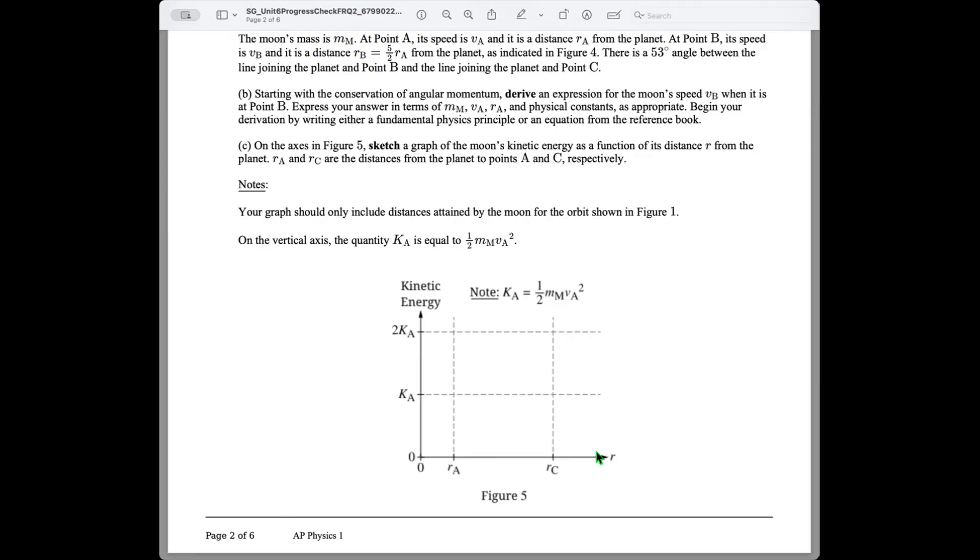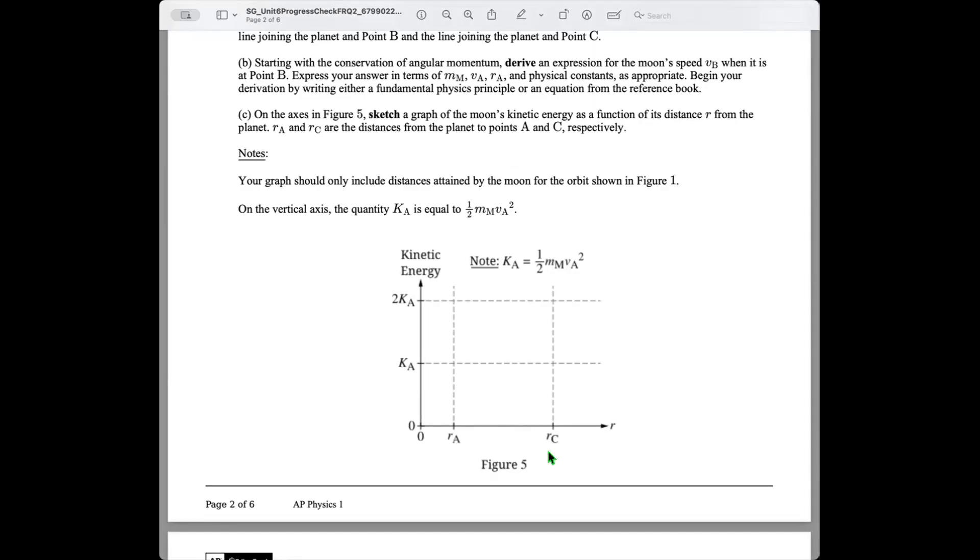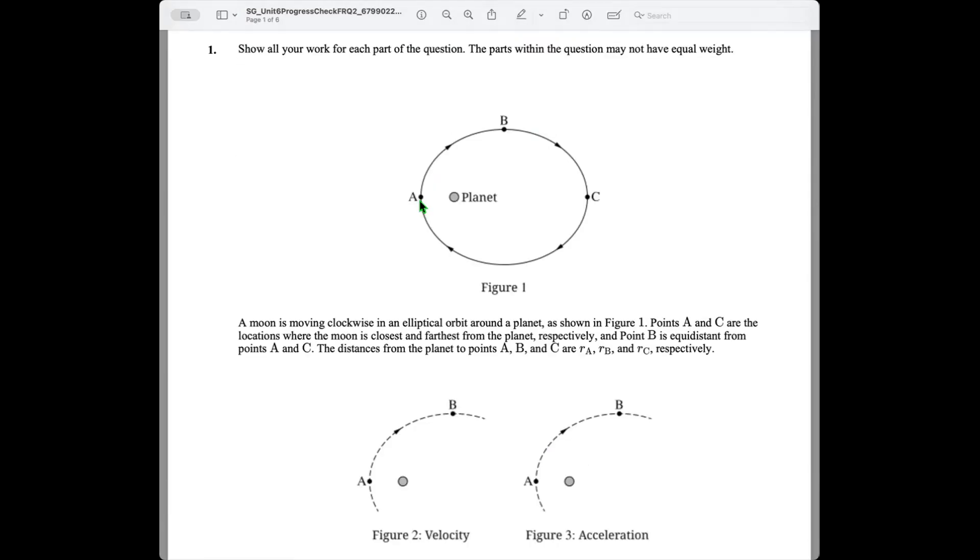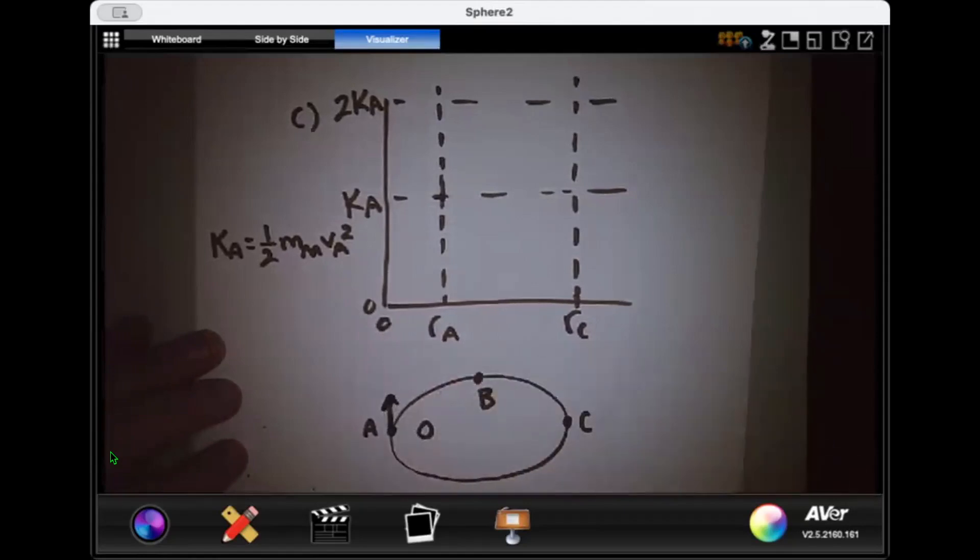All right, part C. On the axis in figure 5, sketch a graph of the moon's kinetic energy as a function of its distance R from the planet. RA and RC are the distances from the planet to points A and C, respectively. Notes, your graph should only include distances attained by the moon for the orbit shown in figure 1. On the vertical axis, the quantity KA is equal to one-half m sub m VA squared. And on the horizontal axis, we're looking at how that kinetic energy is going to change from point A to point C in the moon's elliptical orbit. So just to give context, we're looking at kinetic energy at point A all the way to point C. What's happening with kinetic energy?